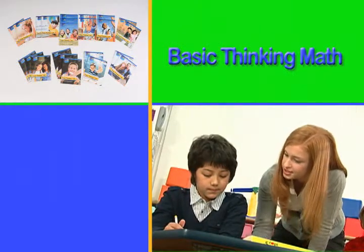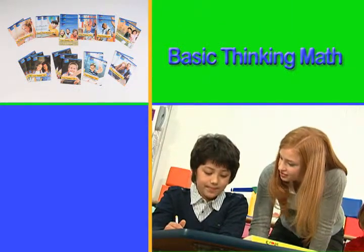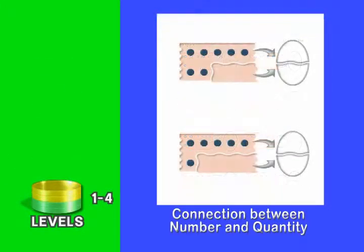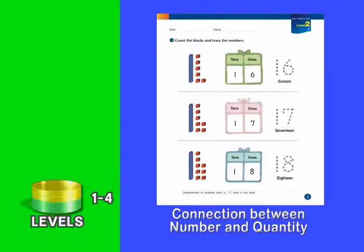What will students learn in basic thinking math lessons? In levels 1 through 4, students will learn number order and the connection between number and quantity.